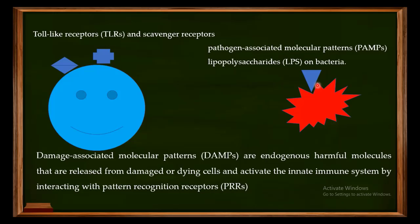There is another important term: damage-associated molecular patterns (DAMPs). DAMPs are indigenous harmful molecules released from damaged or dying cells, and they activate the innate immune system by interacting with pattern recognition receptors (PRRs). To differentiate: PAMPs are present on live pathogenic bacteria and are recognized by toll-like receptors or scavenger receptors, while DAMPs from damaged or dying cells are recognized by PRRs. All of these — PRRs, toll-like receptors, and scavenger receptors — are present on the surface of macrophages.